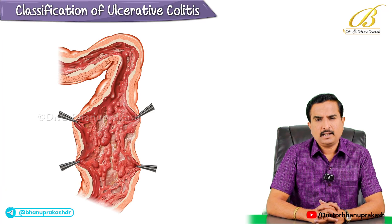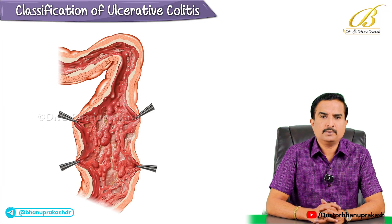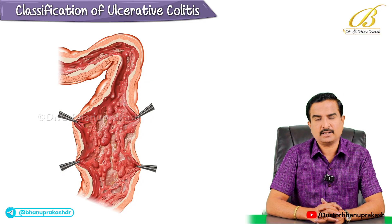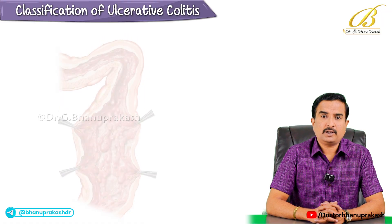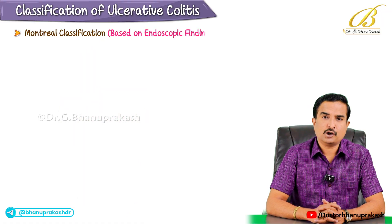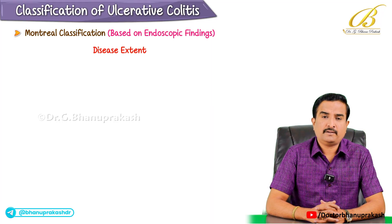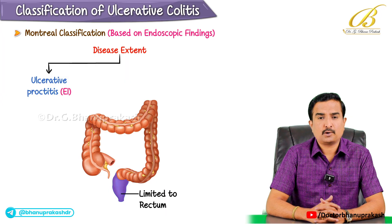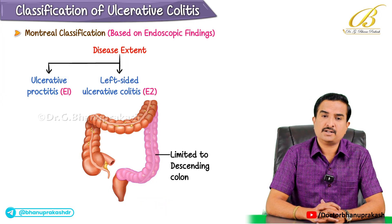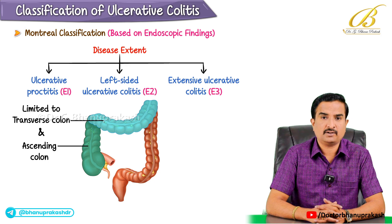Hello guys, in this quick video I want to explain about the classification of ulcerative colitis by disease extent. I'm going to discuss the Montreal classification, which is mainly based on endoscopic findings. Based on disease extent, there are three categories: ulcerative proctitis E1, left-sided ulcerative colitis E2, and extensive ulcerative colitis E3.